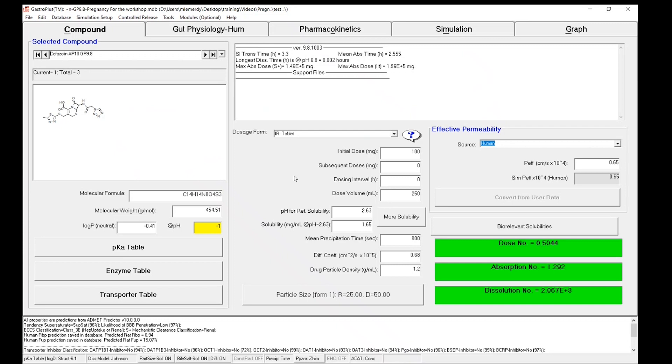Cefazolin is an antibiotic used during the delivery process to prevent infections that could occur. This drug is typically administered IV. Before we do a simulation for the pregnant populations, we need to make sure the model is able to predict the PK in healthy subjects. So to do so, I've already created a record for the IV bolus one gram.